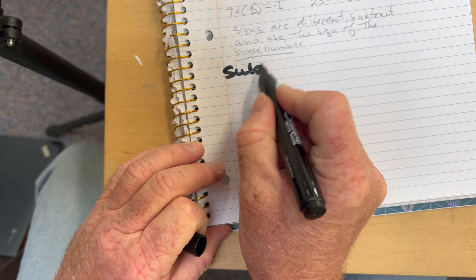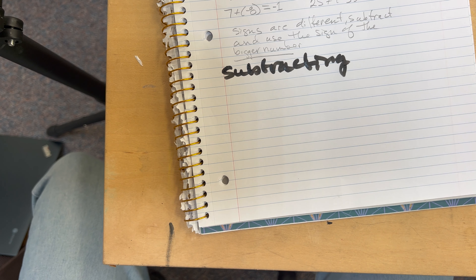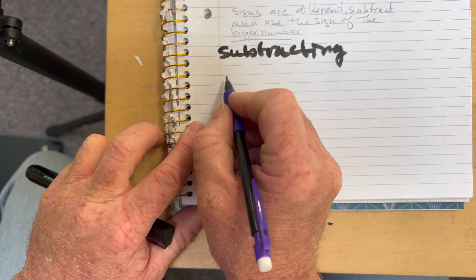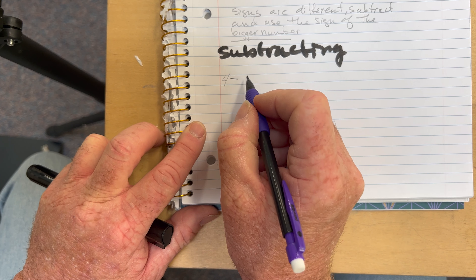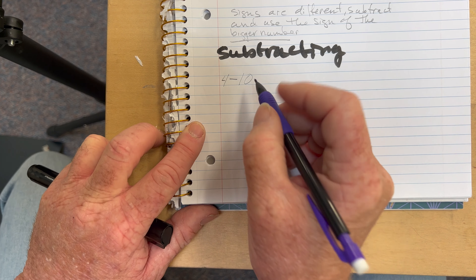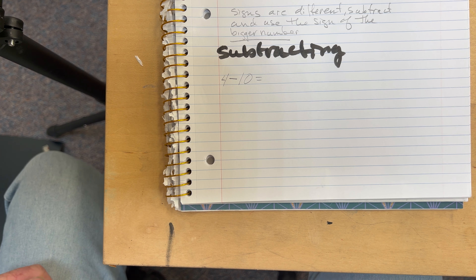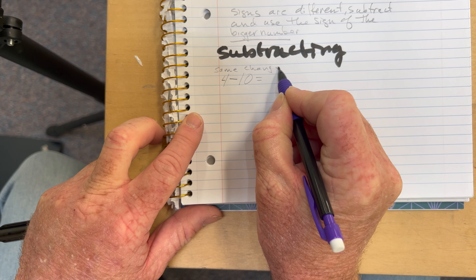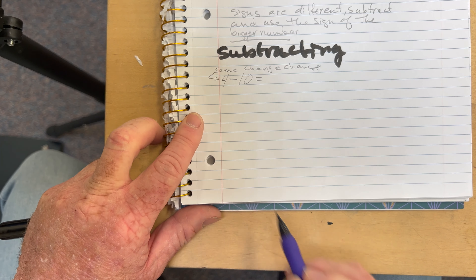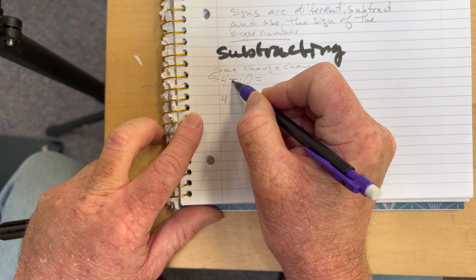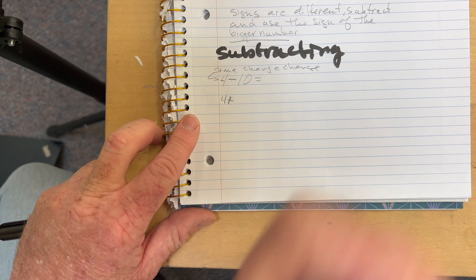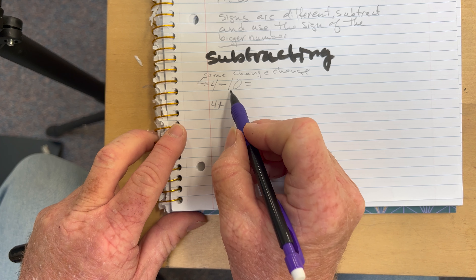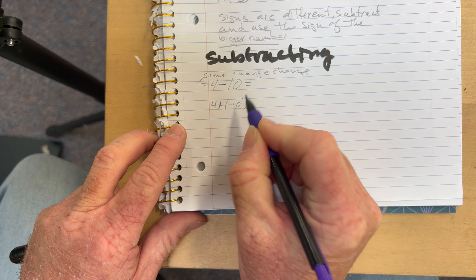Now let's look at subtracting. Subtracting is a little bit trickier. There's a little thing we're going to do called same, change, change. So let's say I have 4 minus 10. I'm going to keep the 4 the same, change the subtraction to addition — because I know the rules of addition — and change the positive 10 to a negative 10. So you see: same, change, change.